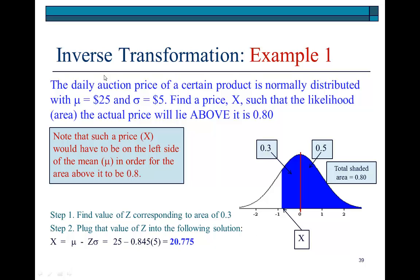Example number one says here that the daily auction price of a certain product is normally distributed with a mean of $25 and standard deviation of $5. And then it says, find a price x such that the probability, or the likelihood, or the area, if you like, that the actual price will lie above it is 0.8. And here's a side note to guide you. It says, note that such a price would have to be on the left side of the mean in order for the area above it, keyword above it, to be 0.8. And why is that? Because, remember, total area under the curve is equal to 1.